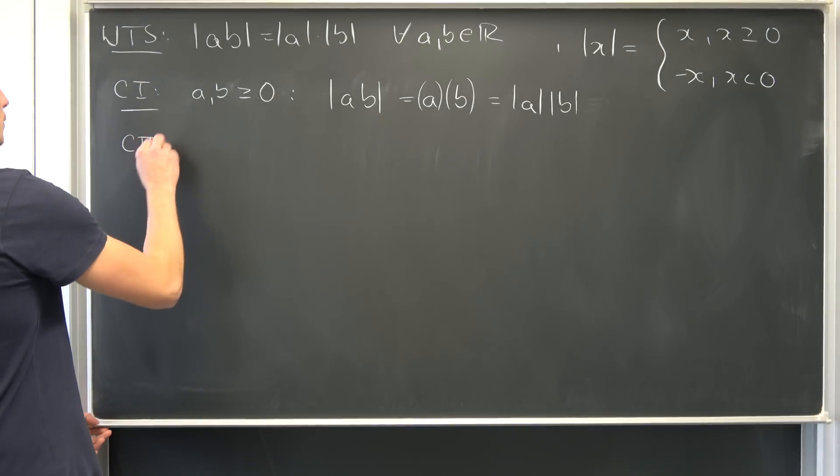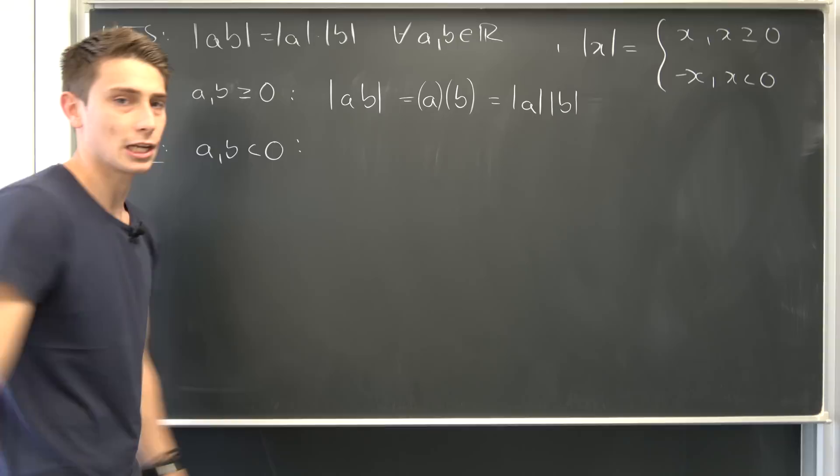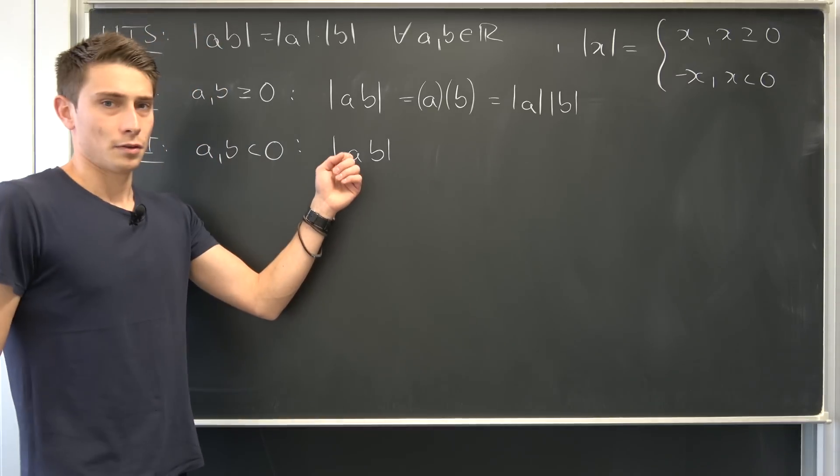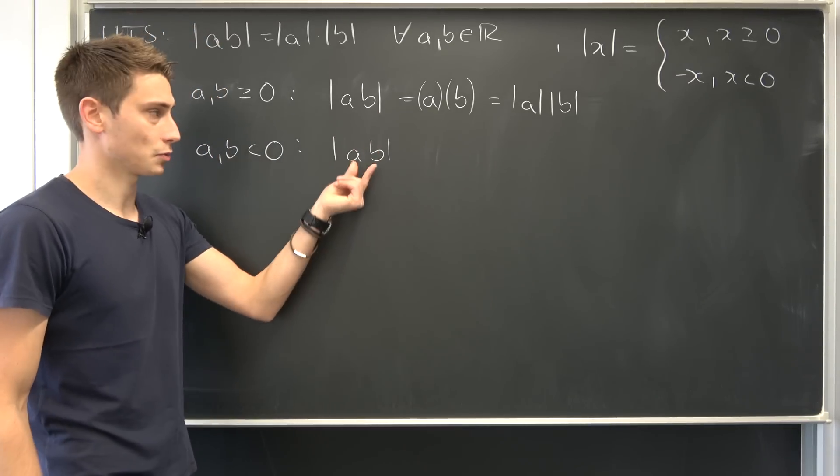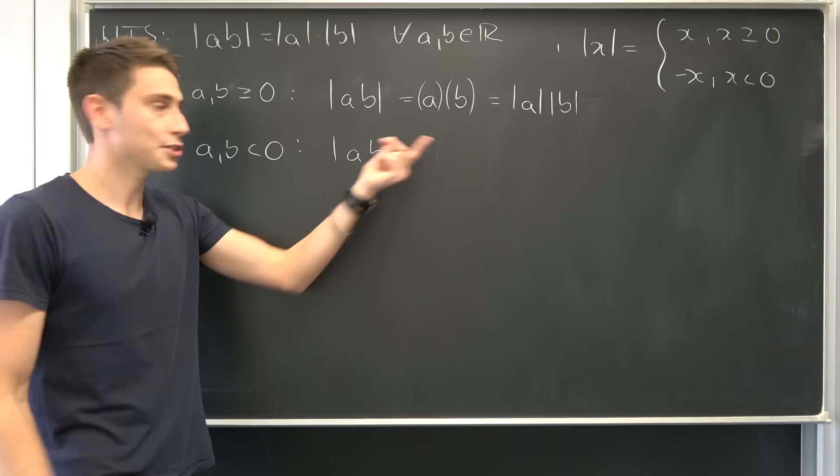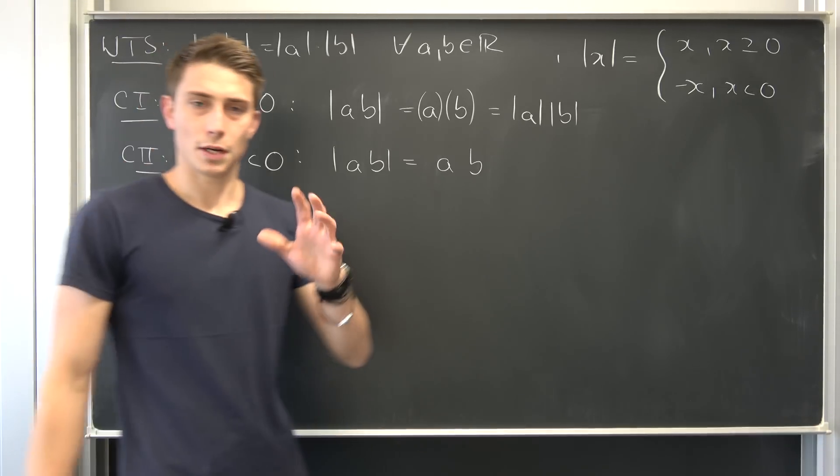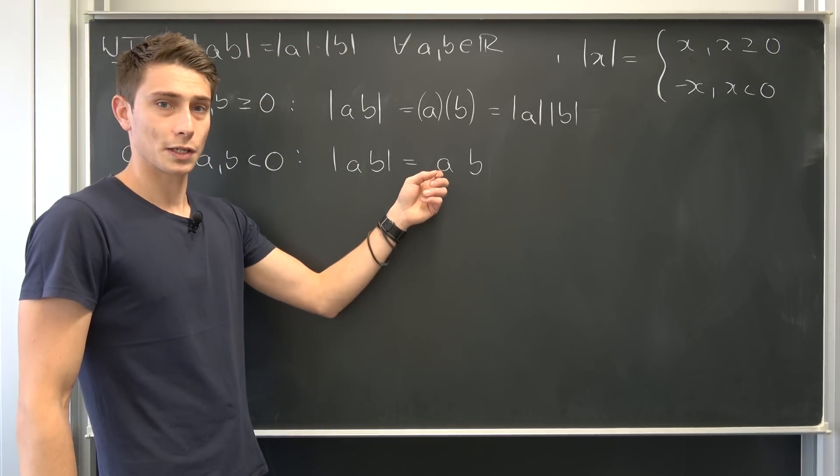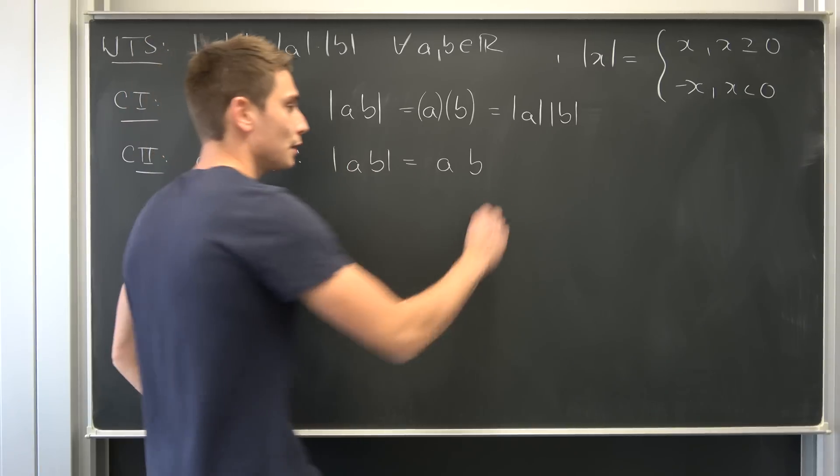Now, for the second case. A and B are strictly less than zero. Well, once again, we have A times B. Just like before, negative times negative is going to result in something positive. So, this argument is positive, resulting in the argument itself. A times B. But, here we are going to do something special. We are going to just multiply this thing by positive 1, which is nothing but negative times negative 1.